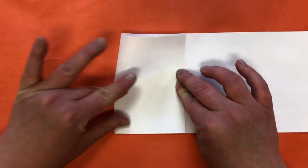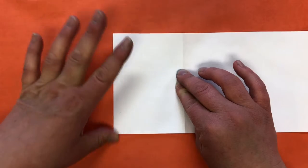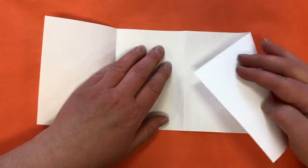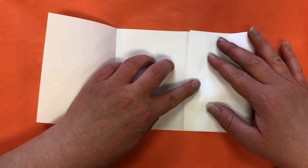Like that, and then I'm going to fold it. Nice crease. Now I'm going to do the same thing with the right side. I'm going to take it and line it up with that center fold.